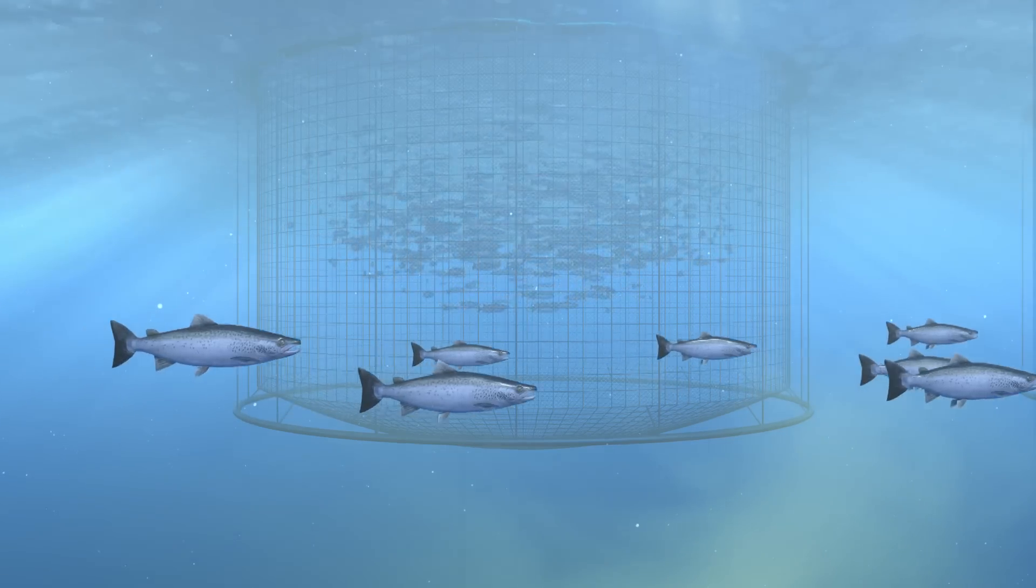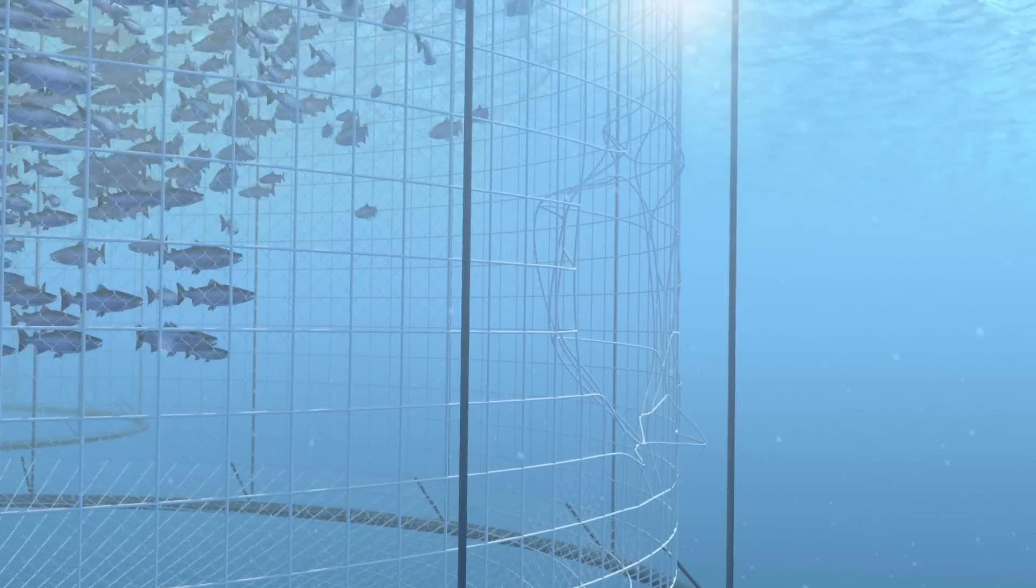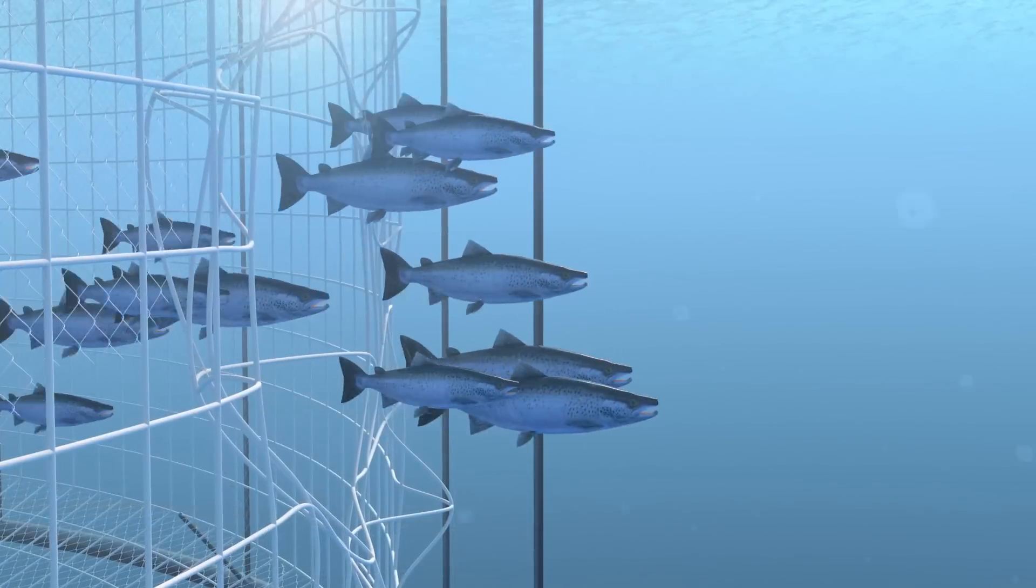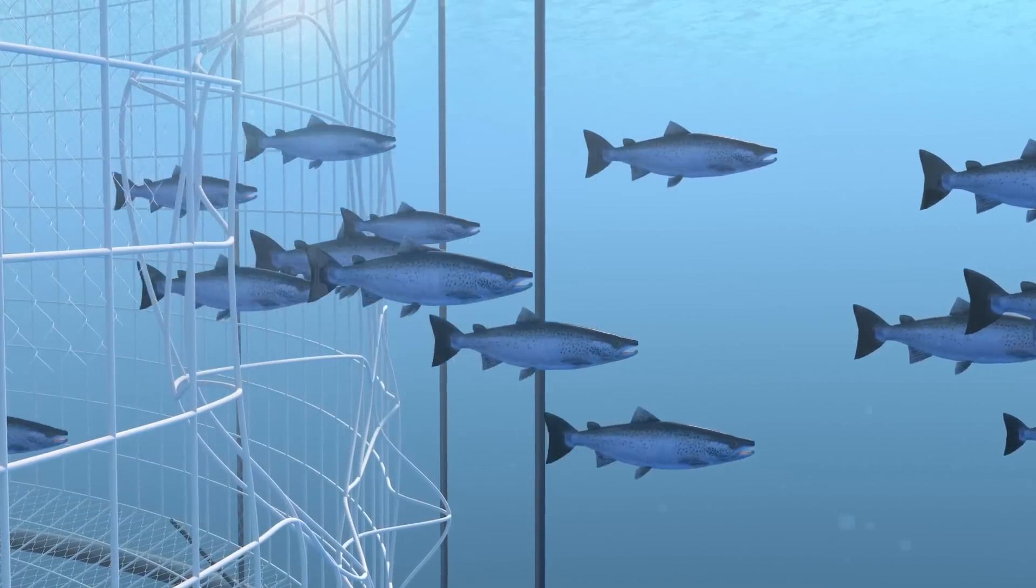In the event of storm or predator damage to the netting, farmed fish can escape. These escaped fish can cause a variety of potential problems, depending on the species that's being farmed.